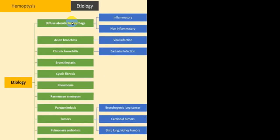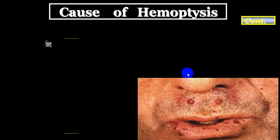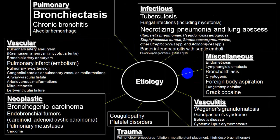Other classification includes diffuse alveolar hemorrhage, acute and chronic bronchitis, bronchiectasis, cystic fibrosis, pneumonia, aneurysm, lung fluke, tumors, pulmonary embolism, and pulmonary hypertension. You can divide into lung parenchyma, vascular group, neoplastic group, infections, miscellaneous, vasculitis, coagulopathic disorders, and traumatic injury. At leisure time, go through all these groups and mention the commonest etiology first, then the rarer conditions.